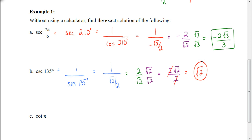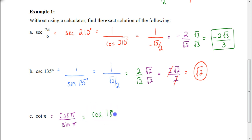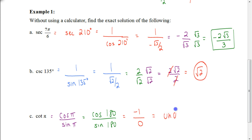Let's try the cotangent of π. The cotangent is the reciprocal of the tangent — so 1 over tangent of π — but since tangent equals sine over cosine, the cotangent is cosine over sine. So we write this as the cosine of π over the sine of π, which is the cosine of 180 over the sine of 180. The cosine of 180 is −1 and the sine of 180 is 0, so this is undefined.